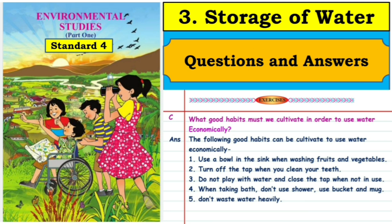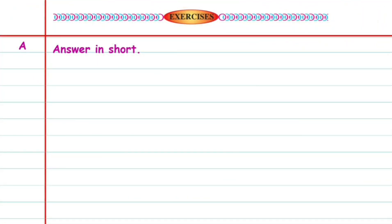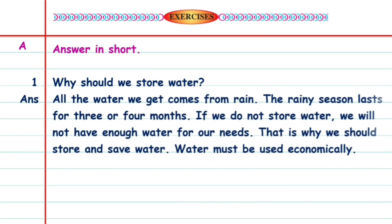A. Answer in short. Question 1: Why should we store water? Answer: All the water we get comes from rain. The rainy season lasts for three or four months. If we do not store water, we will not have enough water for our needs. That is why we should store and save water. Water must be used economically.